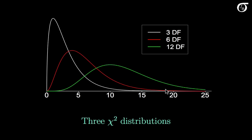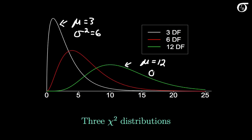In fact, as the degrees of freedom increase, the chi-square distribution looks more and more like a normal distribution. The mean is equal to the degrees of freedom, so in the white curve with 3 degrees of freedom the mean is 3, but for the green curve with 12 degrees of freedom the mean is 12. The variance is double the degrees of freedom, so the white curve would have a variance of 6 and the green curve a variance of 24. The mode of the distribution occurs at the degrees of freedom minus 2, as long as the degrees of freedom are at least 2. So the highest peak of the green distribution with 12 degrees of freedom occurs at 12 minus 2, or 10.